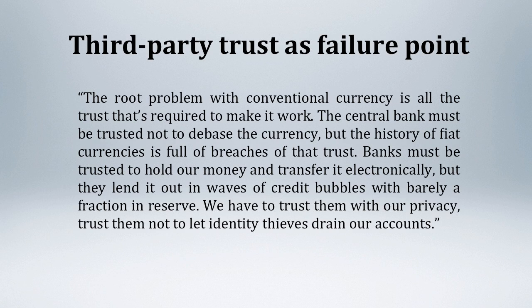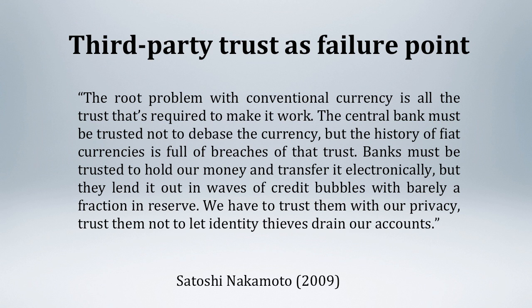The root problem with conventional currency is all the trust that's required to make it work. The central bank must be trusted not to debase the currency, but the history of fiat currencies is full of breaches of that trust. Banks must be trusted to hold our money and transfer it electronically, but they lend it out in waves of credit bubbles with barely a fraction in reserve. We have to trust them with our privacy and trust them not to let identity thieves drain our accounts. This is how the problem was described in 2009 by the creator of Bitcoin, going by the chosen name Satoshi Nakamoto. Yet most of these problems also apply to historical money substitutes that were allegedly backed by metal. If the only significant way for people to store and transfer their wealth is to trust some third party for assistance, this sets up a high-risk potential failure point.